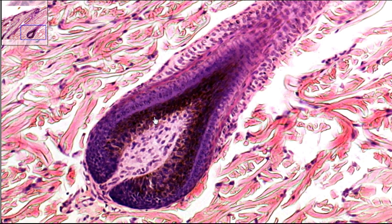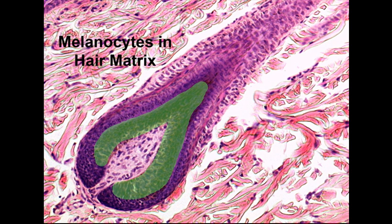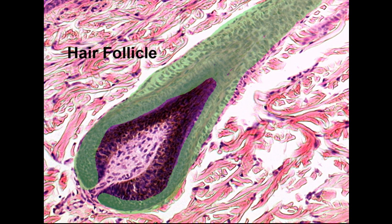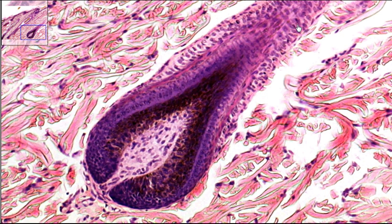Now, just surrounding the hair papilla, these dark colored cells — this is going to be the melanocytes. The melanocytes are where the pigmentation is being created. This allows for the coloration of the hair. Surrounding that and going up along this area and coming down here, that is going to be the hair follicle — that is what will surround the hair as it's moving from this growing point up through the skin. So you have the hair papilla, the melanocytes surrounding it, then you have the hair follicle around the outside.